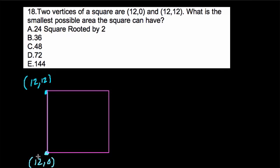Because the distance from 12,0 to 12,12 is up 12 units. So each side is 12, and the area is 144. But can we get a smaller area?